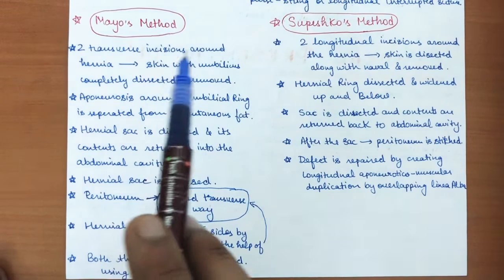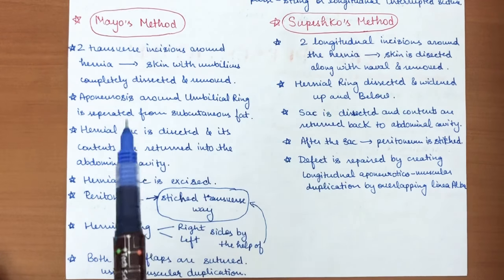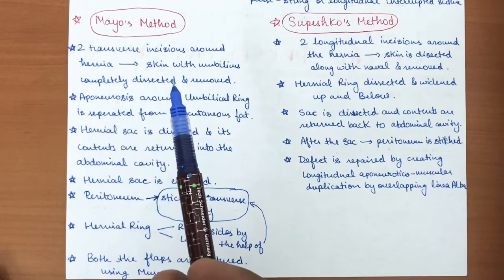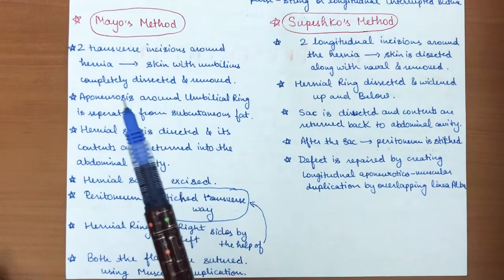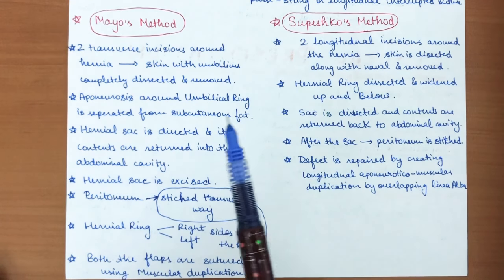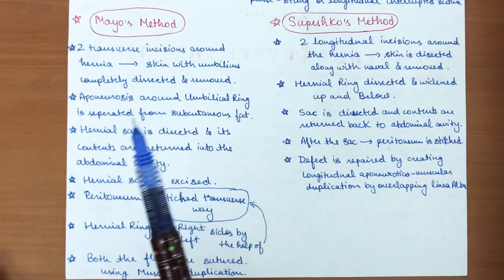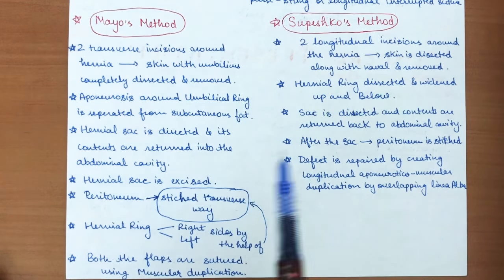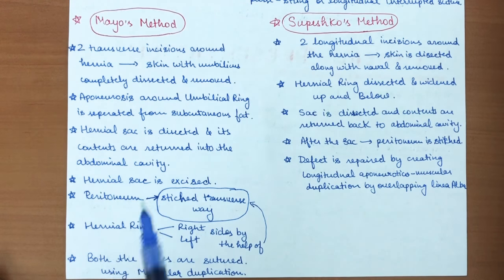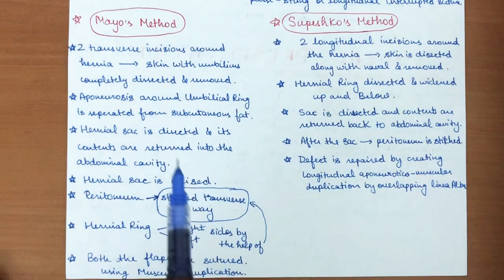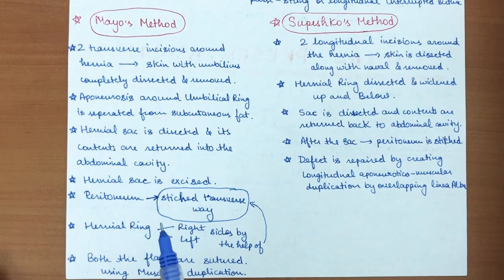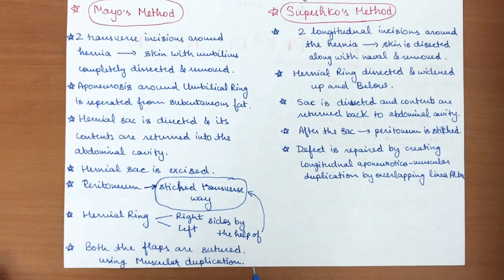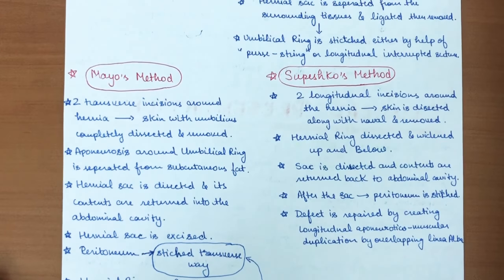In the Mayo method, two transverse incisions are made around the hernia sac. The skin and umbilicus are completely dissected and removed. The aponeurosis around the umbilical ring is separated from subcutaneous fat, the hernia sac is dissected, its contents are returned to the abdominal cavity, and the sac is excised. The peritoneum is sutured transversely, and both flaps of the hernia ring are sutured using muscular aponeurotic duplication.